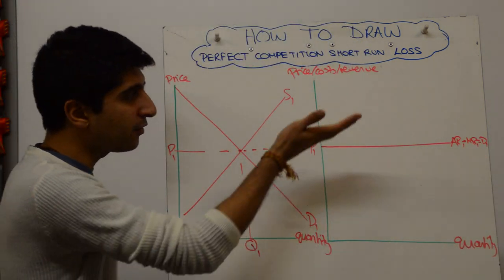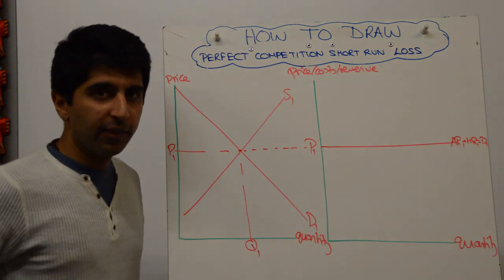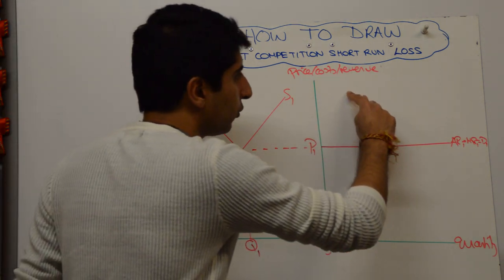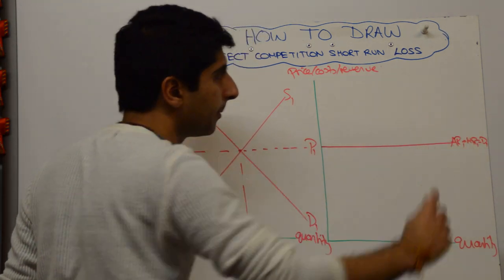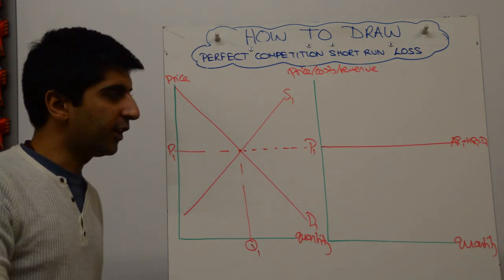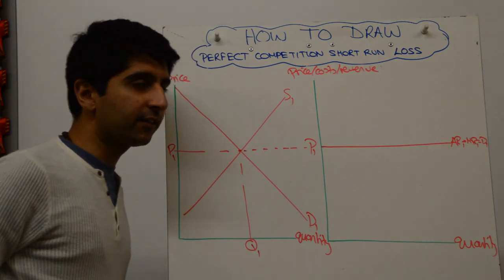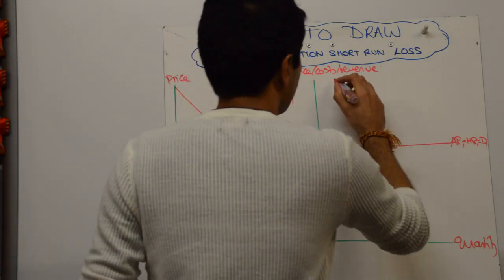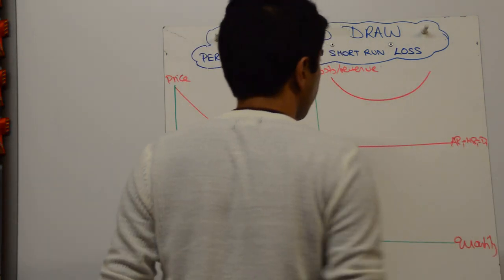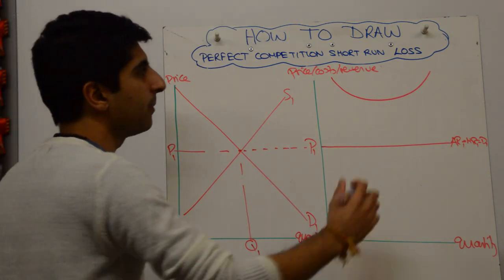Now we want to show a loss. So basically average cost is going to be higher than average revenue. So what we want to draw is an average cost curve quite high up. Like in my previous video, AC went way below. This one, keep AC quite a way above. That's going to be very helpful. So something like this will do the job. Very high up AC and label it as you go along.